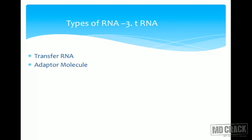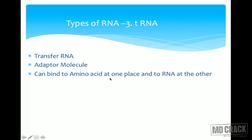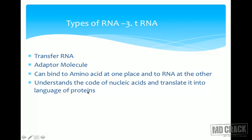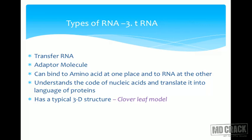The third type is tRNA — transfer RNA. It is an adapter molecule: just as an adapter converts a square plug to a round plug, tRNA can bind to an amino acid at one end and to the mRNA at the other. It understands the code of nucleic acids and the language of proteins, enabling it to translate. tRNA has a characteristic three-dimensional cloverleaf structure. There are nearly 60 different species of tRNA, and it has an anticodon arm, a variable arm, a TΨC arm, a DHU arm, and a CCA ending at the three-prime end.